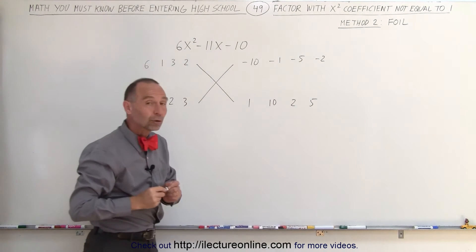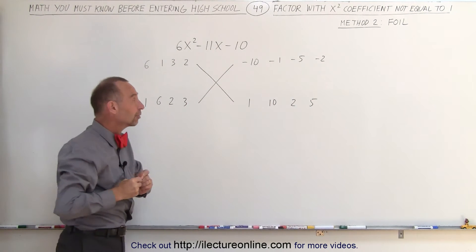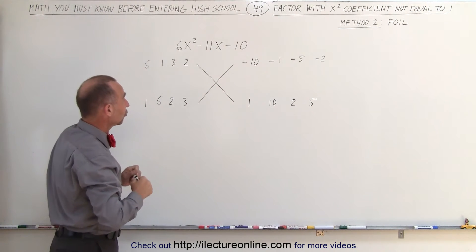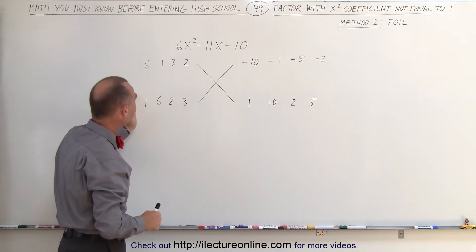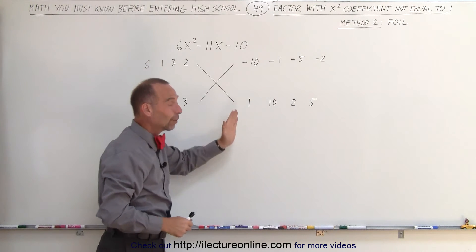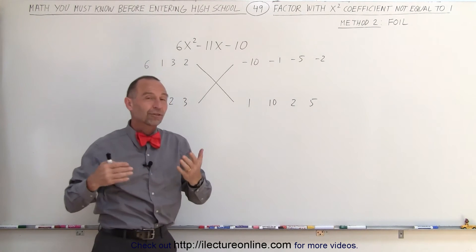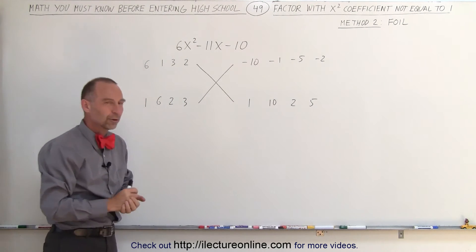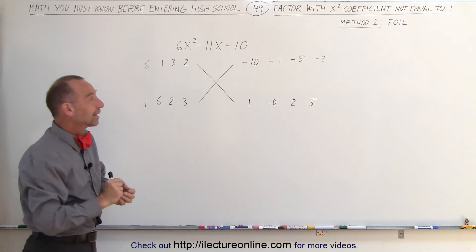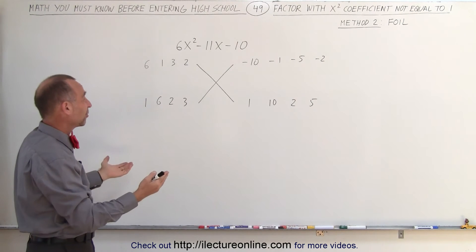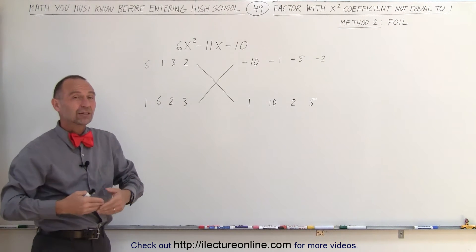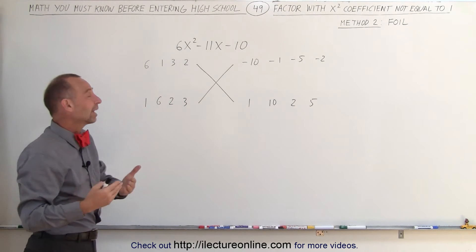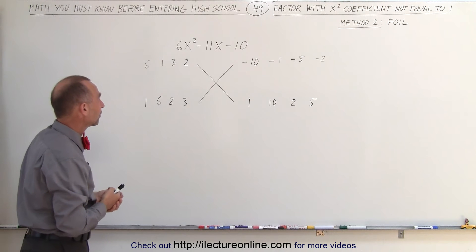Now we're going to look at all the possible combinations. Since there are 4 on the left side and 4 on the right side, there's a total of 16 different combinations.